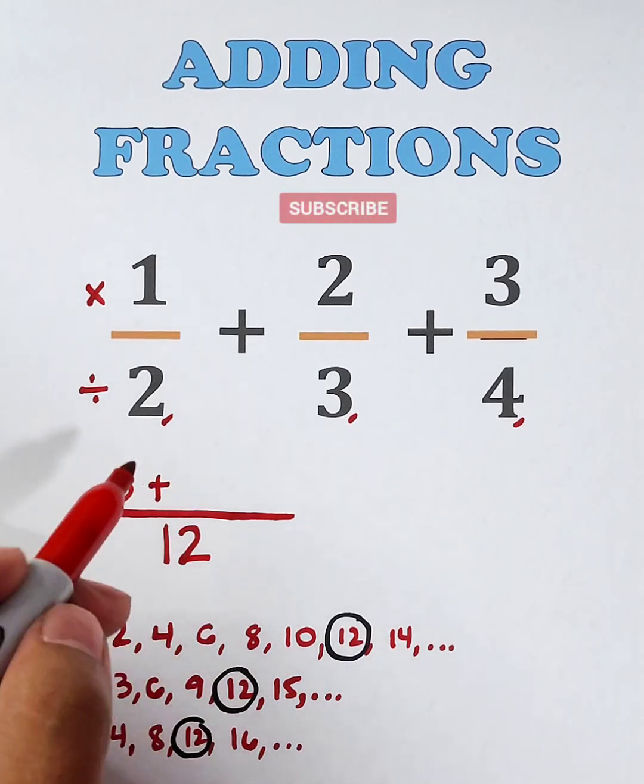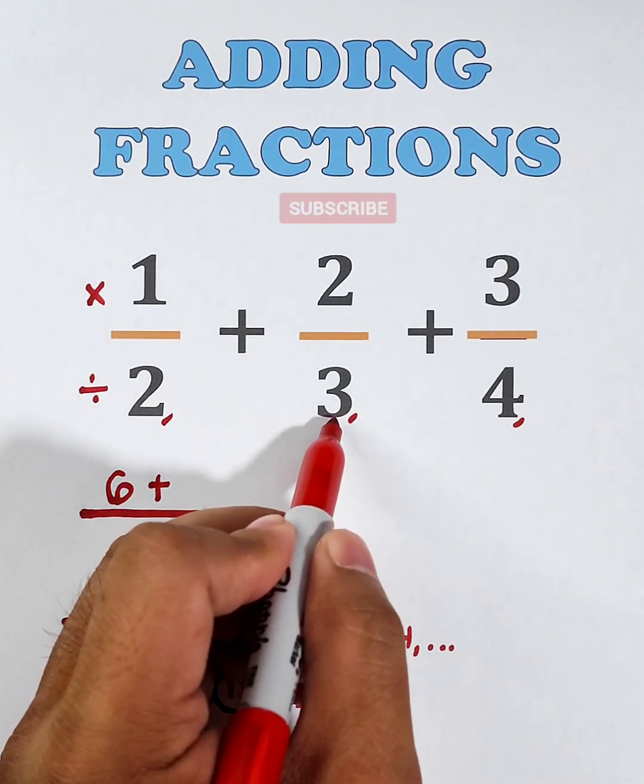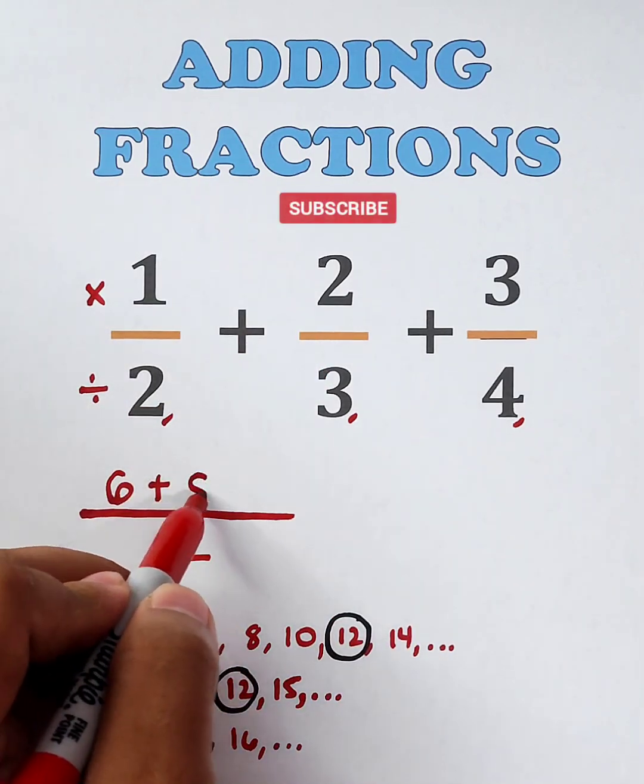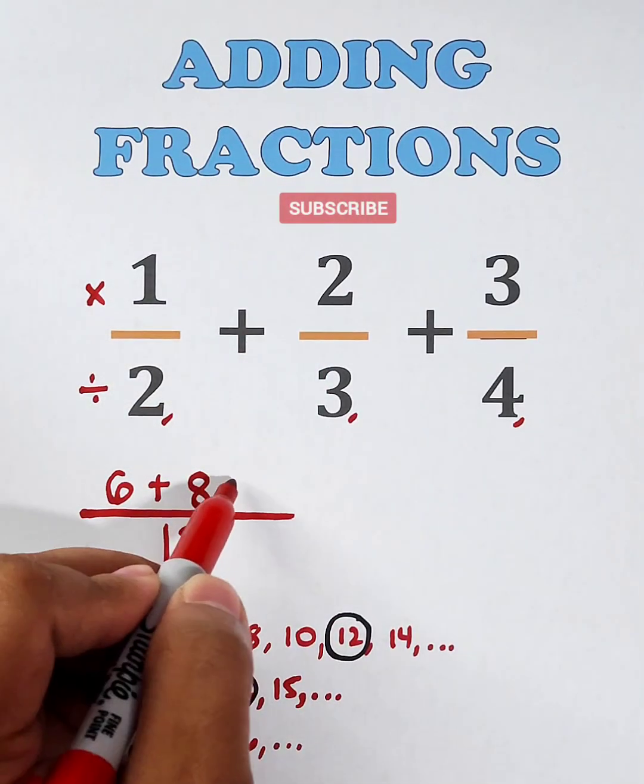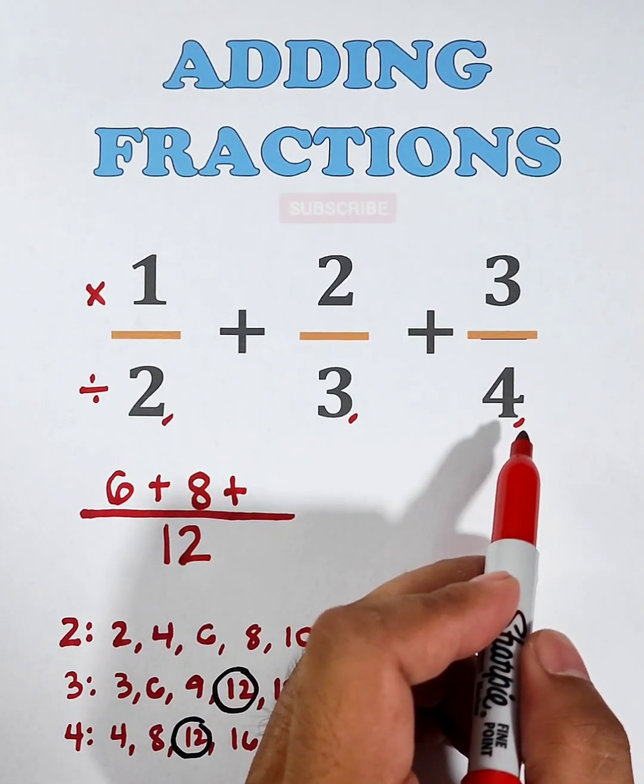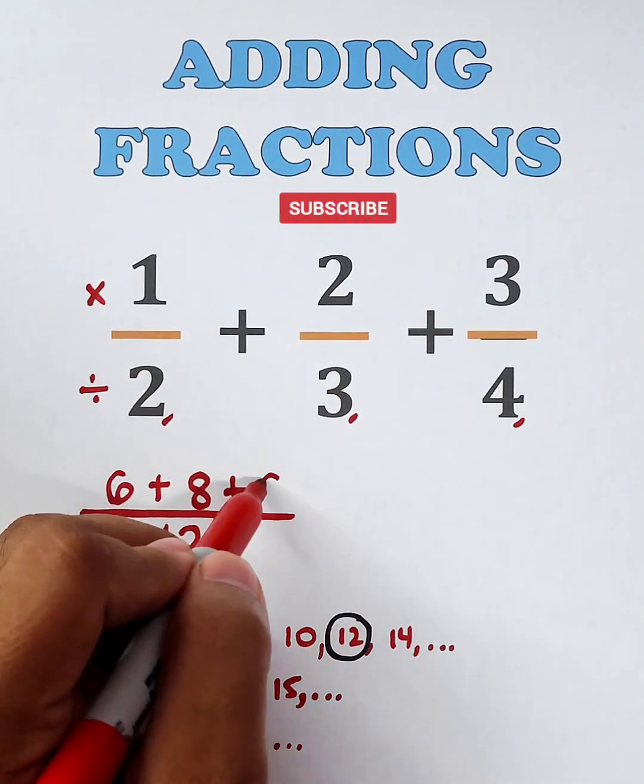Plus 12 divided by 3, that is 4, times 2, that would be 8. Next, 12 divided by 4, that is 3, times 3, that would be 9.